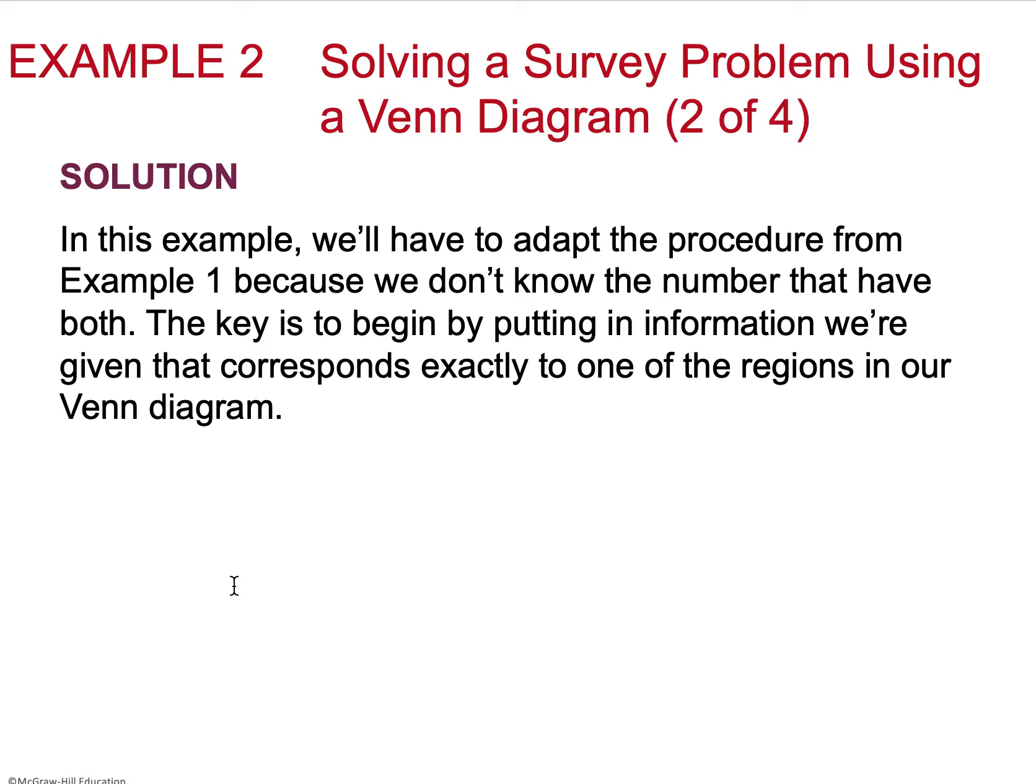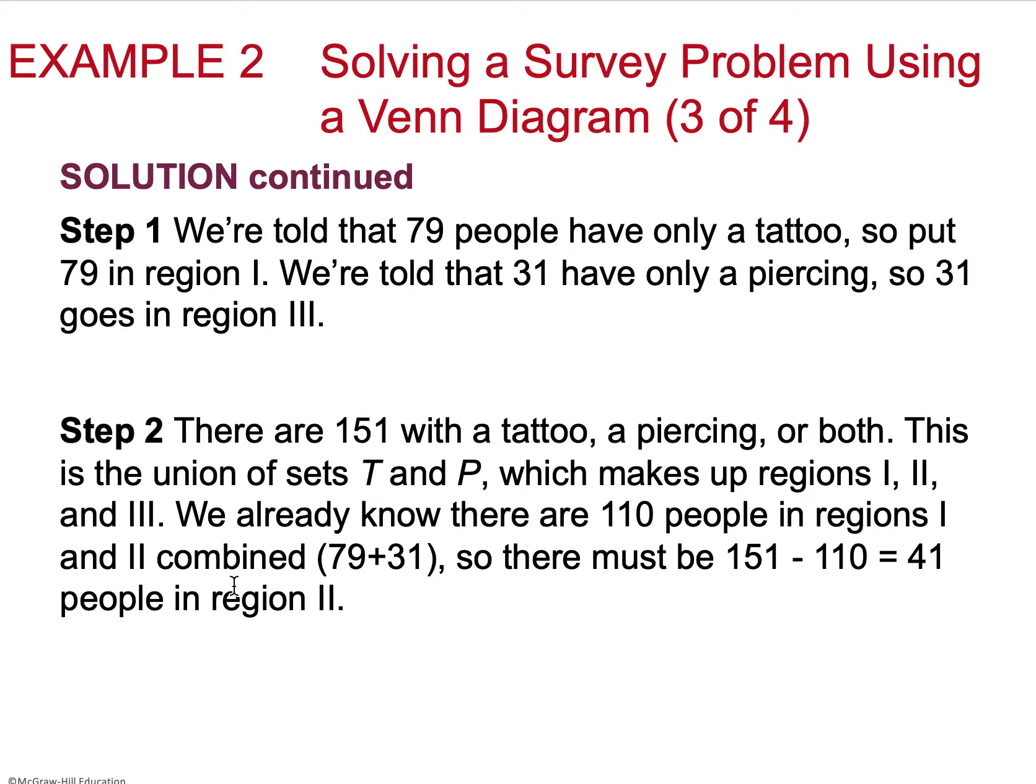In this example, we're going to have to adapt the procedure slightly because we don't know the number of both. So we're going to put in the information that we know, and then figure out the information we don't know. So in step one, we're told 79 people have only a tattoo, so we're going to put 79 in region one. We're told 31 people only have a piercing, so we have 31 people in region two.